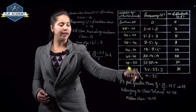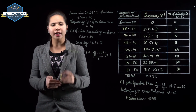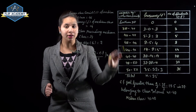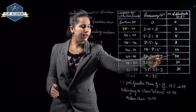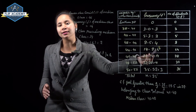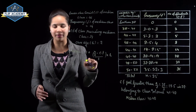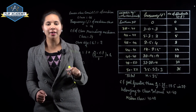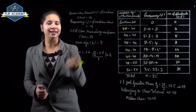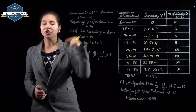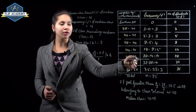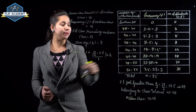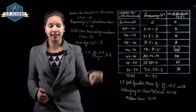The cumulative frequency just greater than N/2 = 17.5 is 28 (since 14 < 17.5 < 28), so the median class is 46–48. Lower limit L = 46, frequency of median class f = 14, cumulative frequency of preceding class cf = 14.